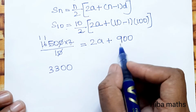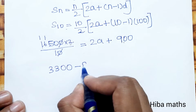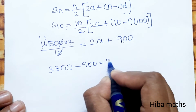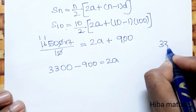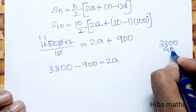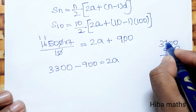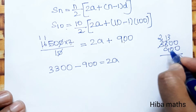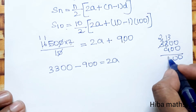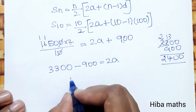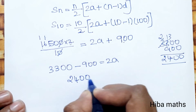So 3,300 plus 900 on one side gives us minus 900. That is equal to 2A. So 3,300 minus 900 equals 2,400. Therefore 2A equals 2,400.